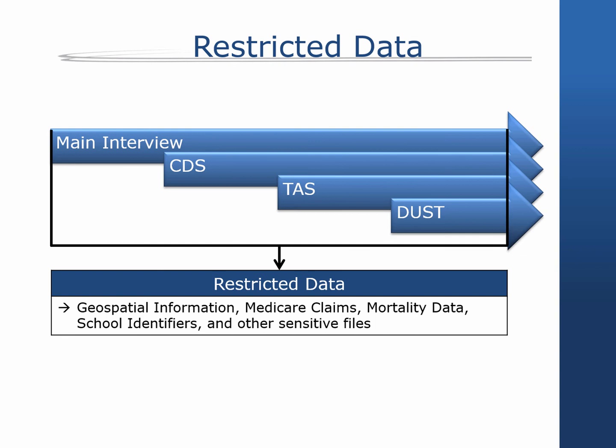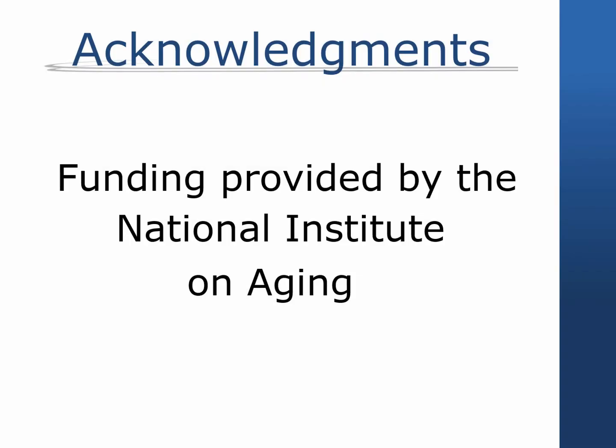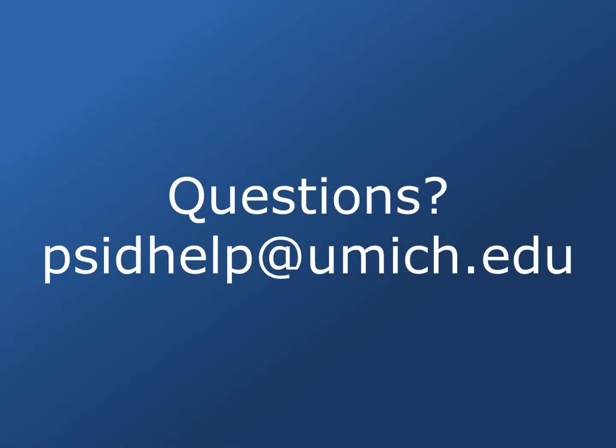Restricted files include, for example, geospatial data, Medicare claims, mortality data, and school identifiers. A complete listing and directions on how to request access to restricted data files are available on the PSID website. This tutorial was produced by Nora Insulera and Vicki Friedman in collaboration with the Michigan Center on the Demography of Aging with funding from the National Institute on Aging. This ends the introduction to the Panel Study of Income Dynamics. Comments and questions may be sent to psidhelp@umich.edu.